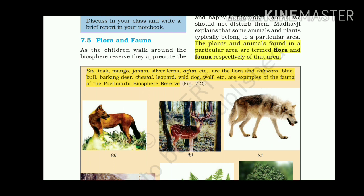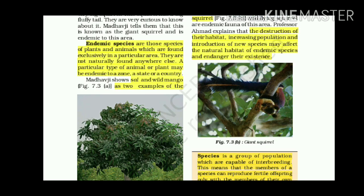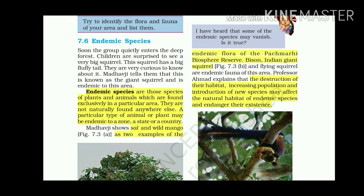The flora of the Pachmari Biosphere Reserve includes sal, teak, mango, jamun, silver ferns, and arjun. The fauna includes chinkara, blue bull, barking deer, cheetah, leopard, wild dog, and wolf. Children are surprised to see a giant squirrel with a fluffy tail. Madhavi tells them it is endemic to this area. Endemic species are plants and animals found exclusively in a particular area and not naturally found anywhere else. Madhavi shows sal and wild mango as examples of endemic flora of the Pachmari Biosphere Reserve.